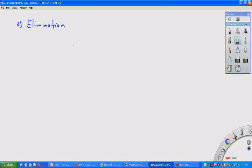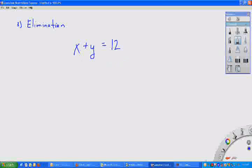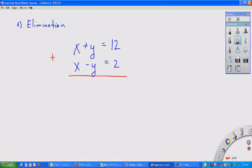The whole point of elimination is that we're going to add two equations together, and we're going to see what cancels out. So for instance, let's take a look at equation x plus y equals 12. The other equation is x minus y equals 2. So what we're going to do is add these two equations together.